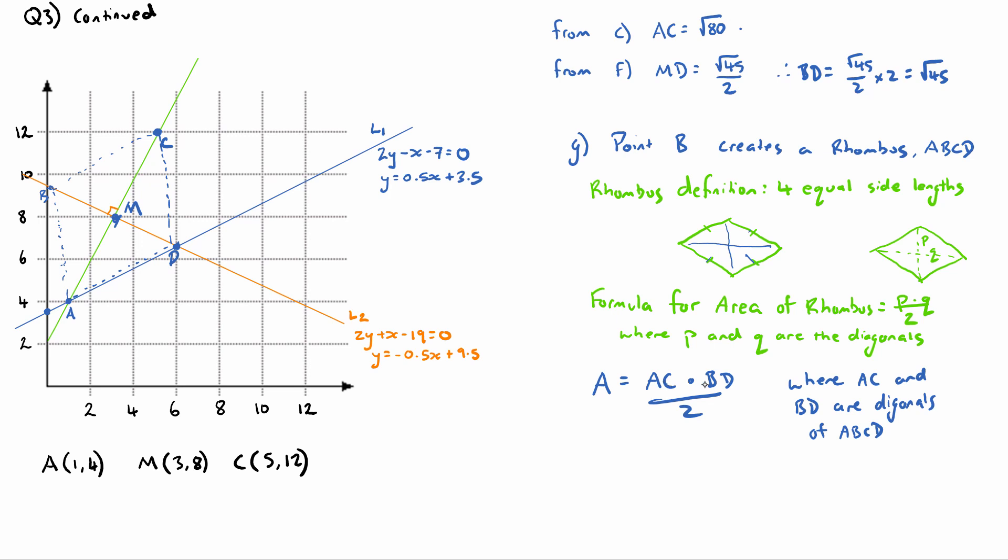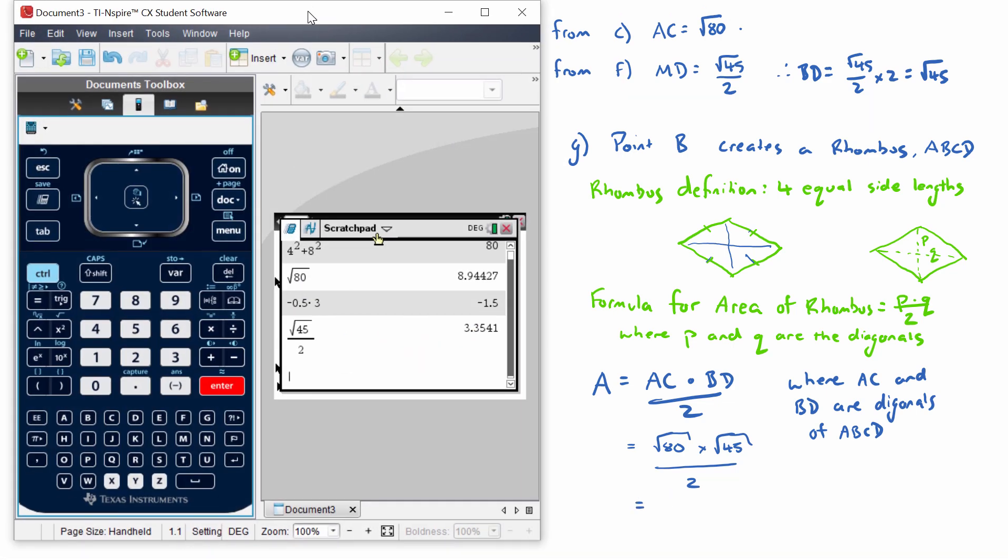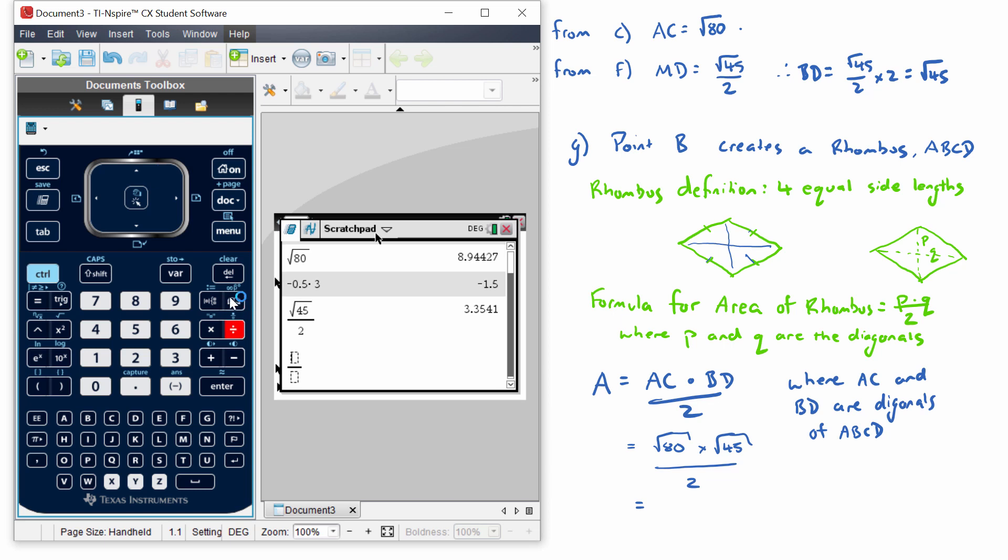Okay, we have our two diagonal lengths, now we can substitute those in. AC equals √80 multiplied by BD which is √45, all divided by 2. Let's use our calculator: √80 multiplied by √45, all divided by 2, and that equals 30, a nice neat number.